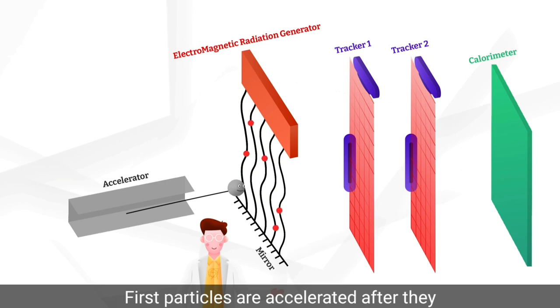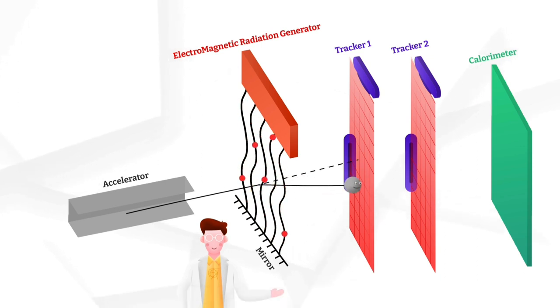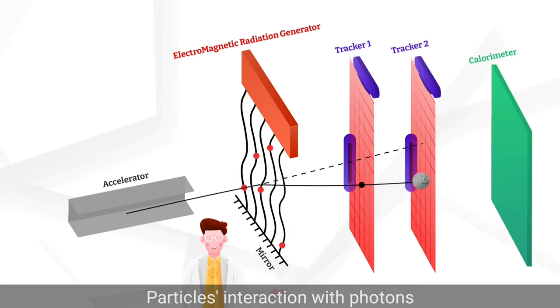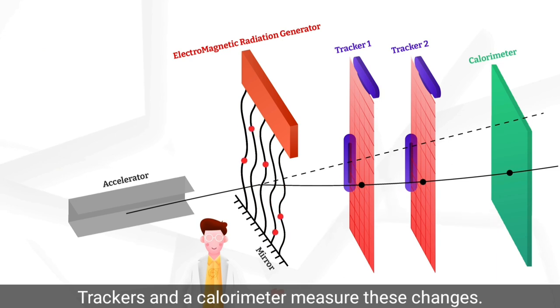First particles are accelerated, after they pass a medium that is full of photons. Particles' interaction with photons can change their energy and direction. Trackers and a calorimeter measure these changes.